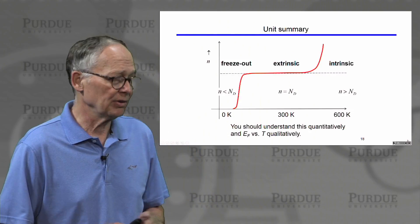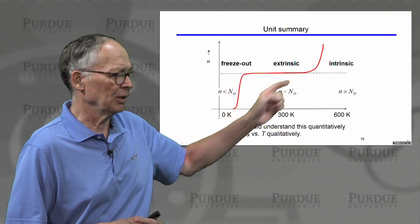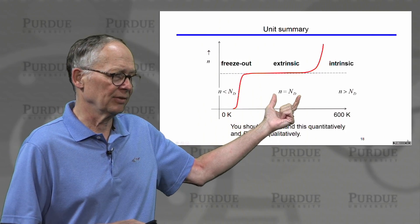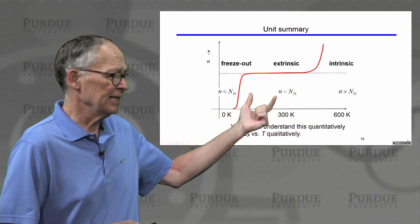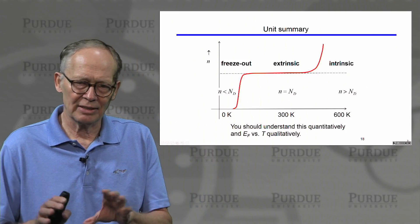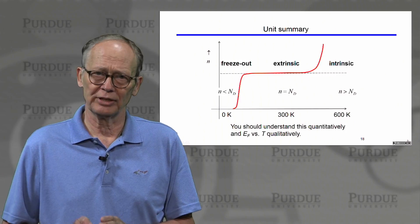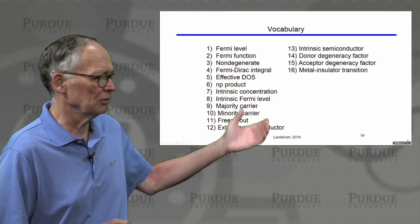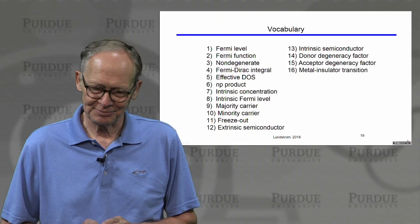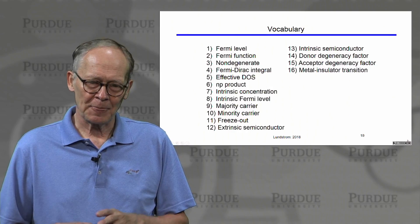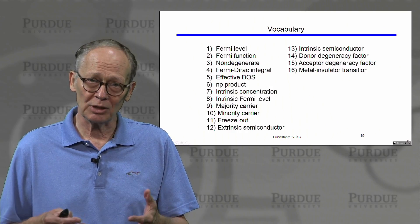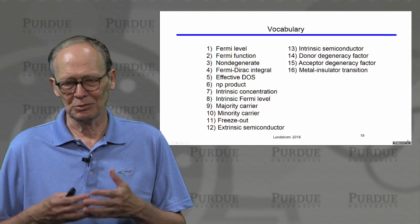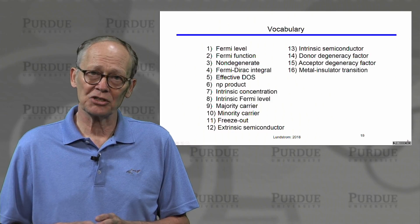So we can basically summarize everything: early in the course we discussed qualitatively why the carrier density versus temperature characteristic has its characteristic shape, and in this unit we discussed quantitatively how to compute electron and hole concentrations in each of the three temperature regions. Having done this, we have a good solid understanding of carrier concentrations under equilibrium conditions. Some of the terms introduced in this unit are listed here — as you review the material, make sure you're familiar with what each term means. We now have the background needed to move from the equilibrium condition to the non-equilibrium condition, which is the condition of interest for semiconductor devices with applied voltages or sunlight shining on them. We'll begin that discussion in Unit 4. Thank you.